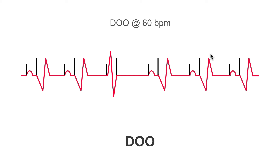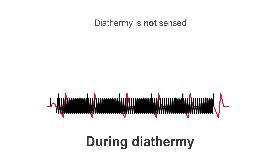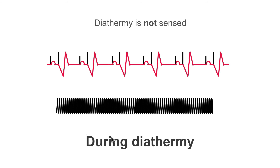So what is so handy about these modes? If we think about surgery, there is a greater risk, especially with diathermy, of over-sensing. If the pacemaker picks up diathermy, it can confuse it into thinking that some of the heart's tissue is depolarising, causing it to withhold pacing. With the pacemaker set to DOO for surgery, even when diathermy is used and we have electromagnetic interference, the mode causes it to completely ignore all interference. Instead, we still maintain a nice paced rhythm, ensuring the heart continues to contract and not jeopardising cardiac output during surgery.